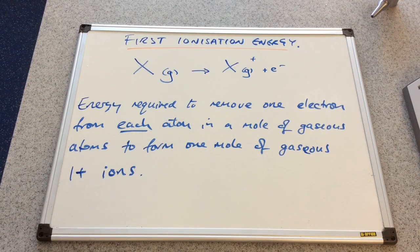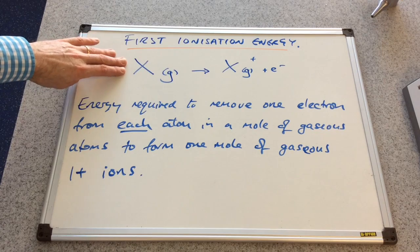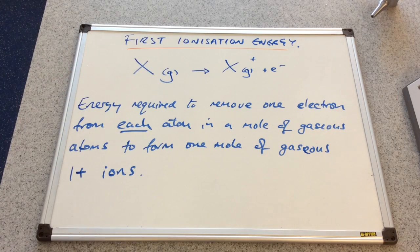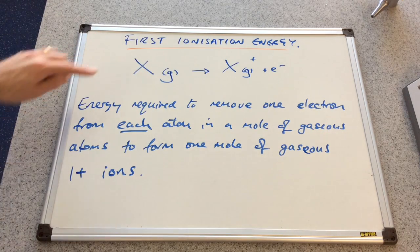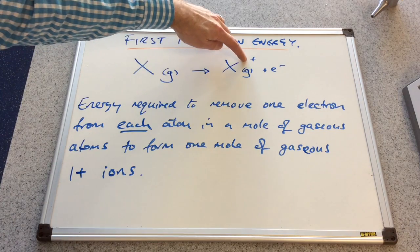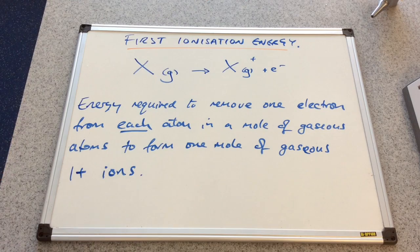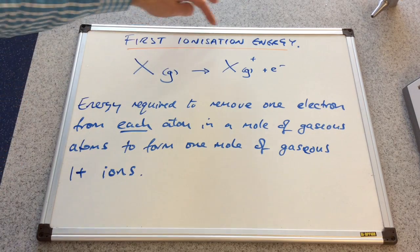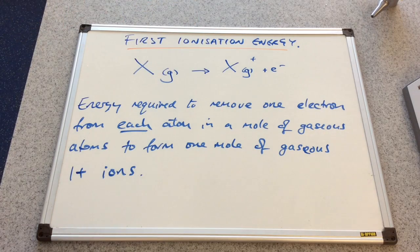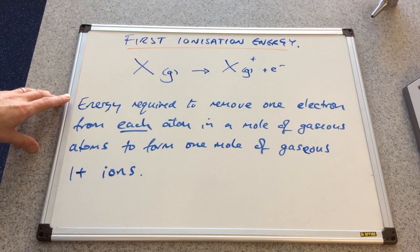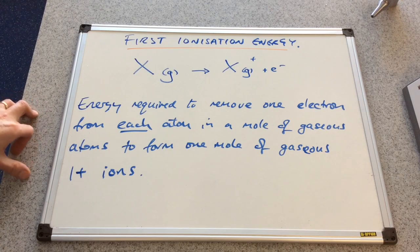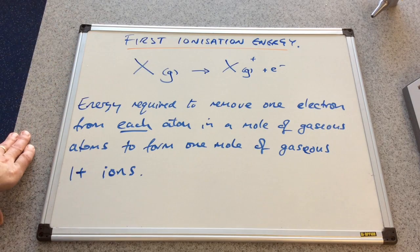We'll start with what we actually mean by first ionisation energy. If we look at the equation first of all, it's just a generic equation for the atom X. We've got one mole of gaseous X atoms and we are turning them into one mole of gaseous X plus ions. We need to remove a mole of electrons from a mole of atoms. The first ionisation energy is the energy required to remove one electron from each of these atoms in a mole of gaseous atoms to form one mole of gaseous X plus ions.